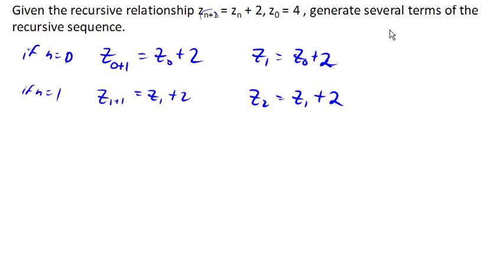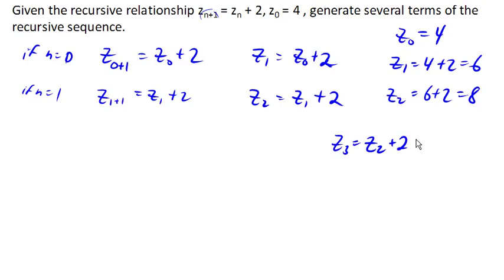So if z_0 is 4, z_1 is gonna be, well, z_0 is 4, so we're gonna replace z_0 with 4 plus 2 is 6. z_2 is z_1 plus 2, and z_1 we just figured out was 6, so z_2 would be 8. z_3 would be z_2 plus 2, which would be 8 plus 2 would be 10. And we can see how this sequence continues. This turns out to be just a basic linear sequence.